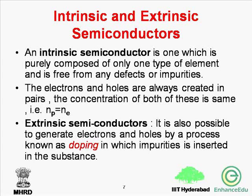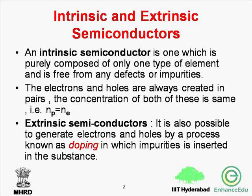Apart from thermal agitation, it is possible to generate electrons and holes by the process of doping. Doping is a process in which impurities are added to a substance. Such semiconductors are known as extrinsic semiconductors, and they exhibit greater conductivity than intrinsic semiconductors. Extrinsic semiconductors can be further classified as n-type and p-type.